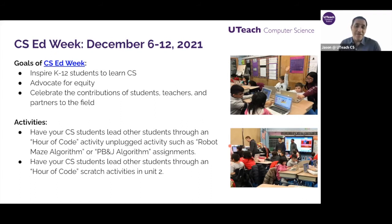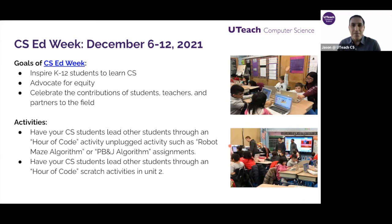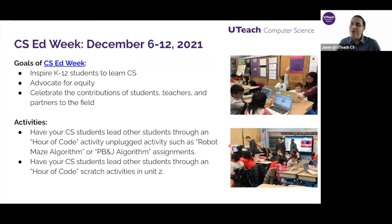Not every school is going to have access to computers, and that's why we also recommend unplugged activities during CS Week. In our curriculum, that would be activities like the robot maze algorithm in Unit 2, or in Unit 1, the PB&J algorithm where students have to write an algorithm to make a peanut butter and jelly sandwich. These can be done in middle school or elementary school and really get kids excited because it makes CS relatable to their everyday life - all kids have helped make a peanut butter and jelly sandwich, but not all know they're actually writing an algorithm when they do that.